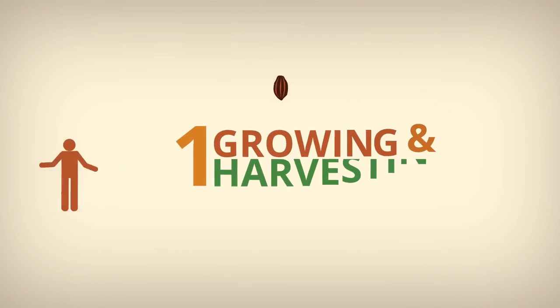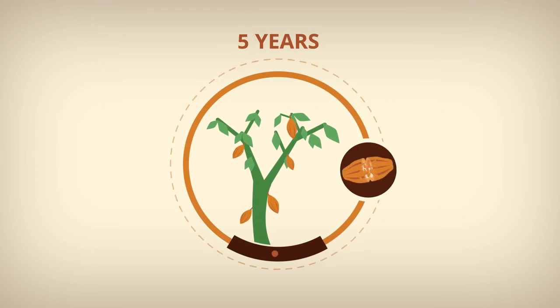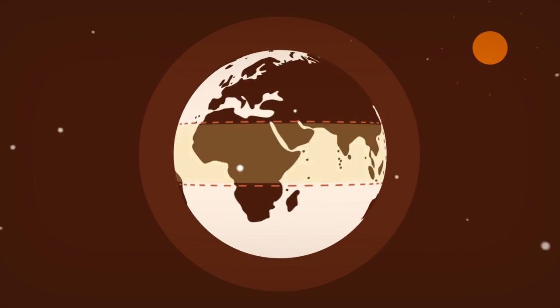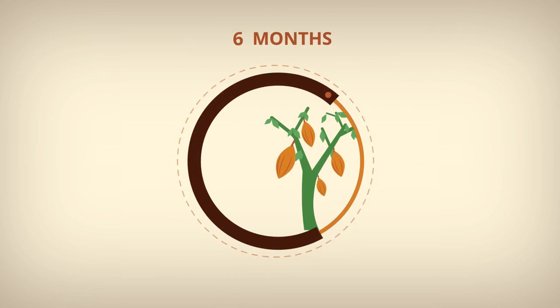From cocoa to chocolate: growing and harvesting. Chocolate begins with cocoa beans that grow in pods on trees found in the tropical heat of the equatorial forest. It takes around five to six months until a cocoa pod is fully grown and ready to be harvested.